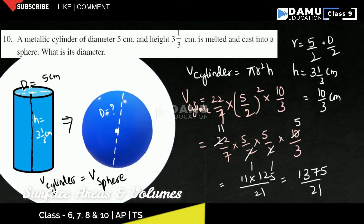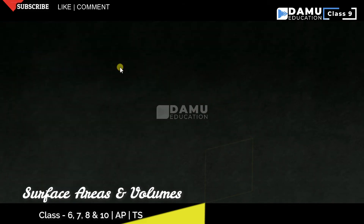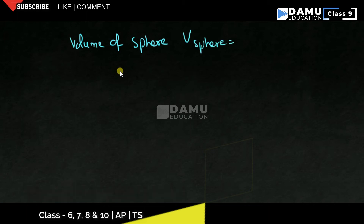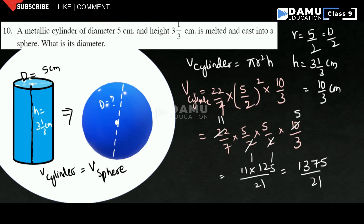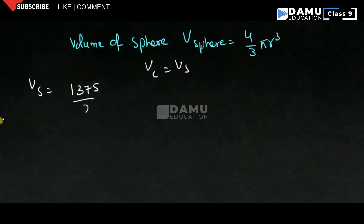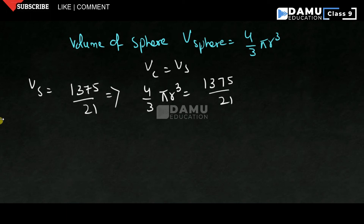Keep this value as it is. Now, what is the volume of the sphere? Volume of sphere will be equal to 4/3 π r³. So volume of the cylinder will be equal to volume of the sphere: 1375/21 = 4/3 into 22/7 into r³.